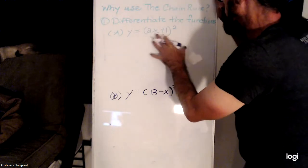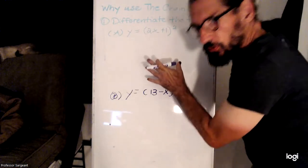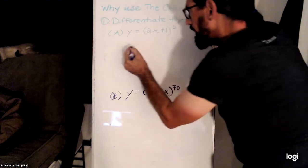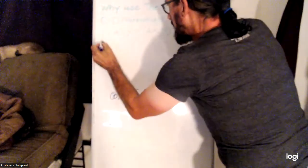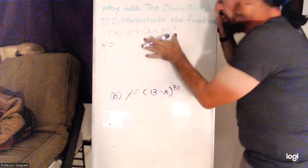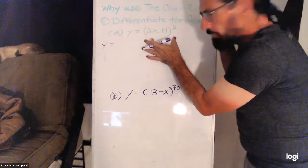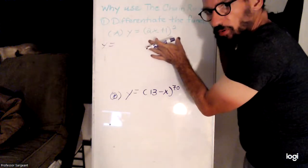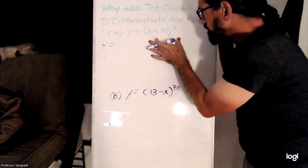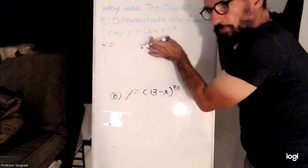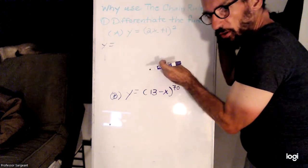Now, suppose that you don't know the chain rule and you rewrite y by squaring this binomial. You can either use the distributive property, including the shortcut known as FOIL, because that's a binomial, or there's a special formula.